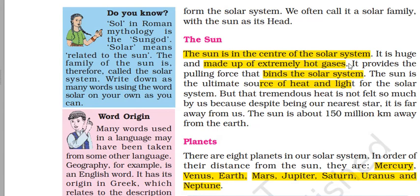Let's study the solar system one by one. The sun is the center of the solar system. It is huge and made up of extremely hot gases, and it provides a pulling force — known as gravitational force — which binds the solar system together. The sun is also the ultimate source of heat and light for the solar system. The distance between the sun and the Earth is 150 million kilometers.